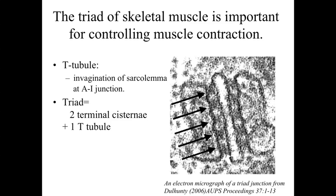If we take a look at skeletal muscle, what we have is what's referred to as a triad — the controlling element for muscle contraction. We're going to have a T-tubule, which is an invagination of the sarcolemma. The plasma membrane dives down into the sarcoplasm at the A-I junction. The T-tubule is the central structure, and on either side of it we have a terminal cisternae — an extension of the sarcoplasmic reticulum. So a triad is basically two terminal cisternae plus one T-tubule, and this is the element involved with controlling muscle contraction by controlling the release of calcium into the cytoplasm.